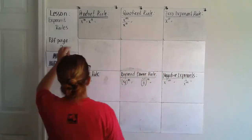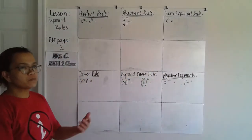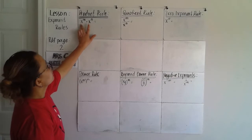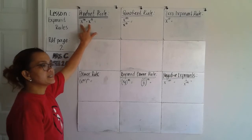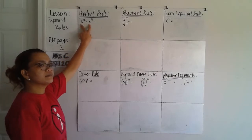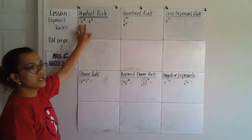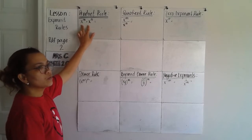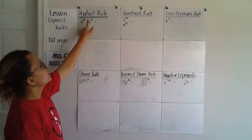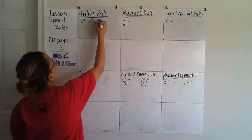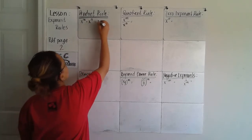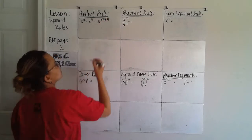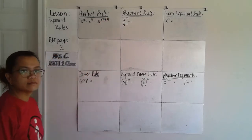For the first rule, it says product rule. The product rule says when multiplying two bases that are the same, write the base and add the exponents. So you copy the base and add the exponent — m plus n.